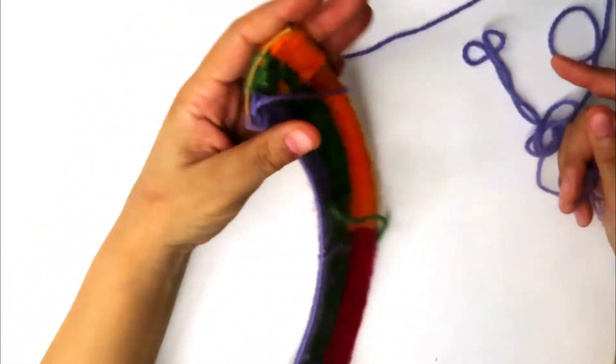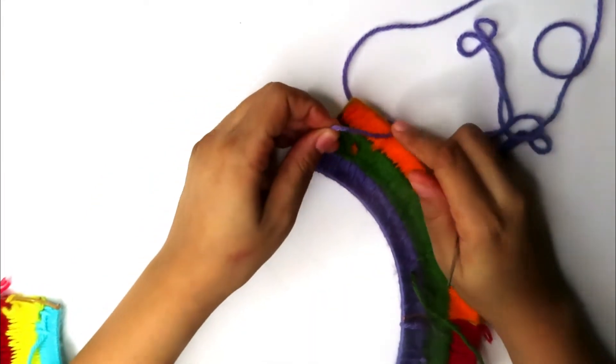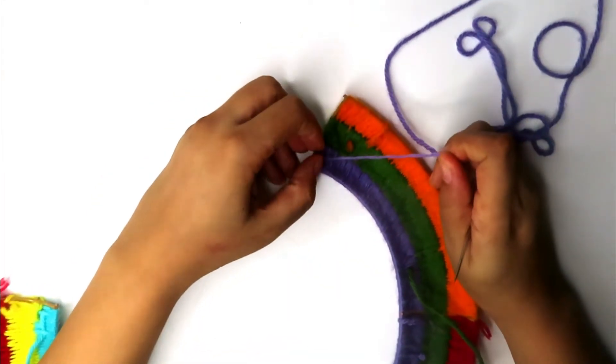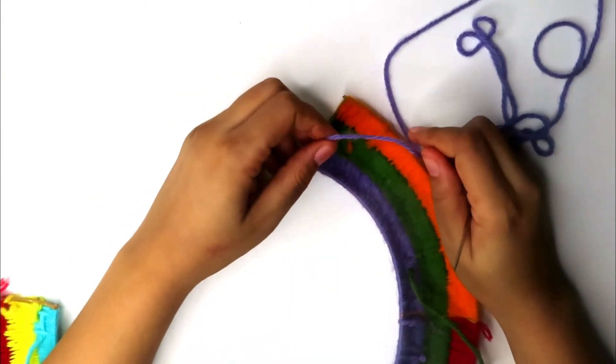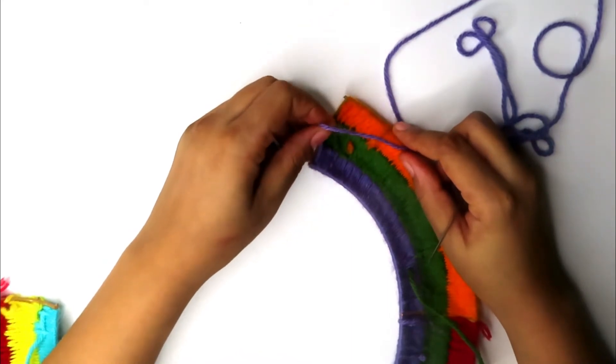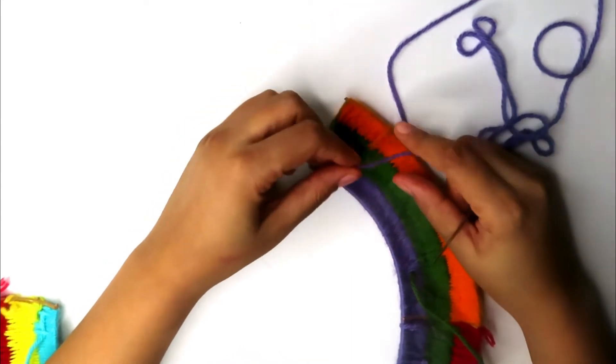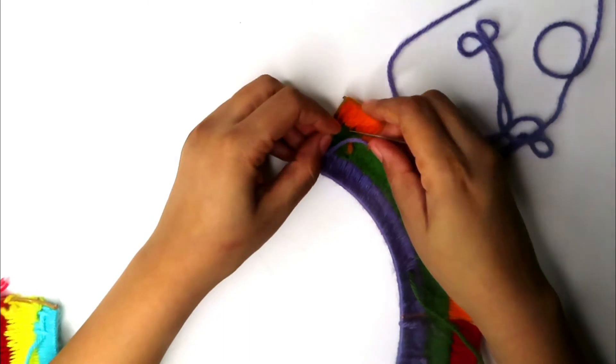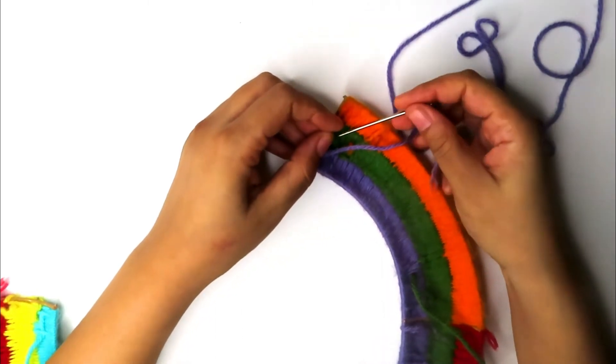So, once you finish threading your entire wreath, flip it over and make a double knot on the back of the wreath. You can either use a knot that's already there or you can make a double knot on one of the posts on the back to secure it.